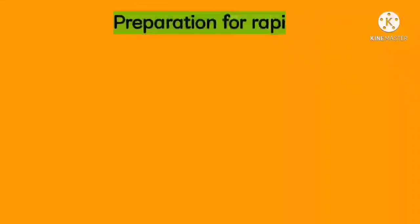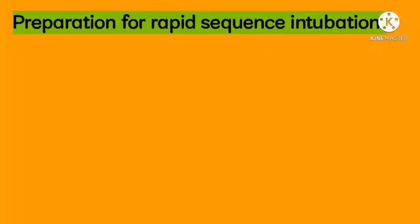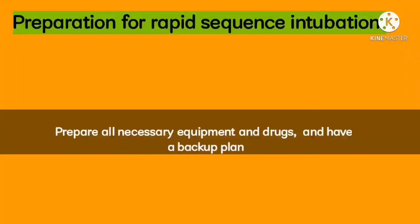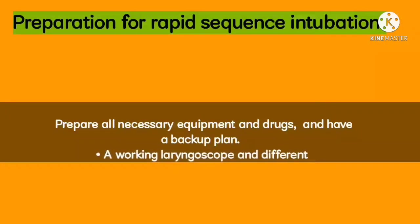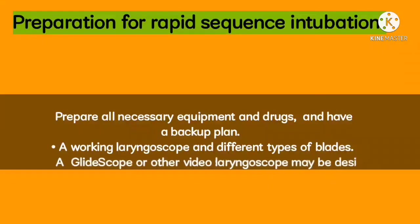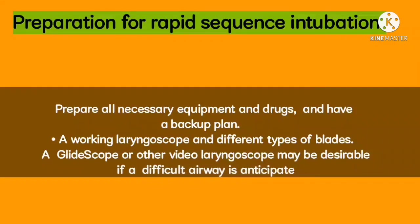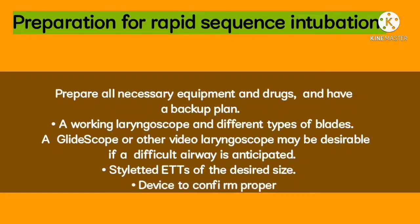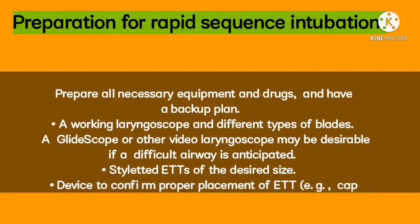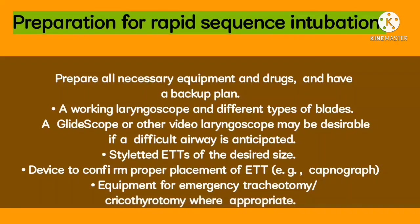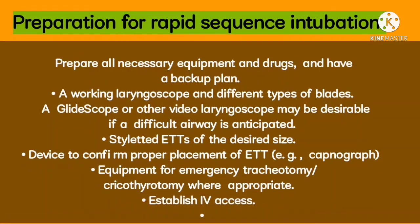Preparation for Rapid Sequence Intubation: First, prepare all necessary equipment and drugs and have a backup plan. A working laryngoscope with different types of blades; a GlideScope or other video laryngoscope may be desirable if a difficult airway is anticipated. ETTs of the desired size; a device to confirm proper placement of ETT, e.g. capnograph; equipment for emergency tracheotomy/cricothyrotomy where appropriate. Establish IV access and attach appropriate monitoring equipment.